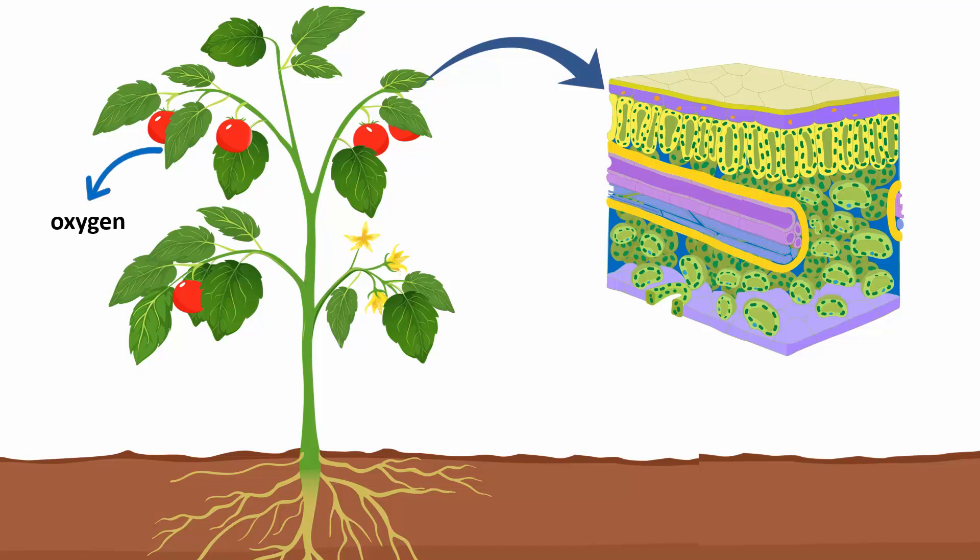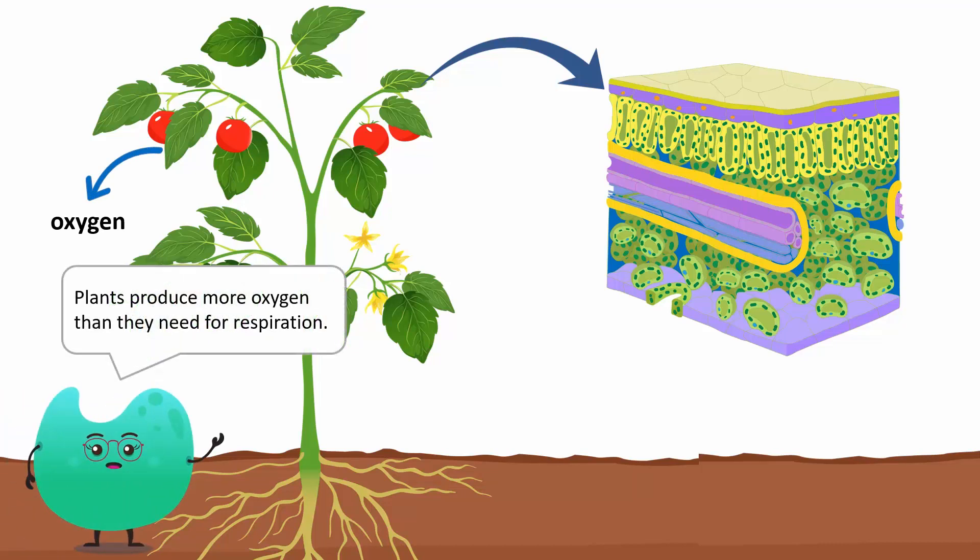Oxygen is produced as a result of photosynthesis. Plants produce more oxygen than they need for respiration. The extra oxygen diffuses out through the stomata during the day.